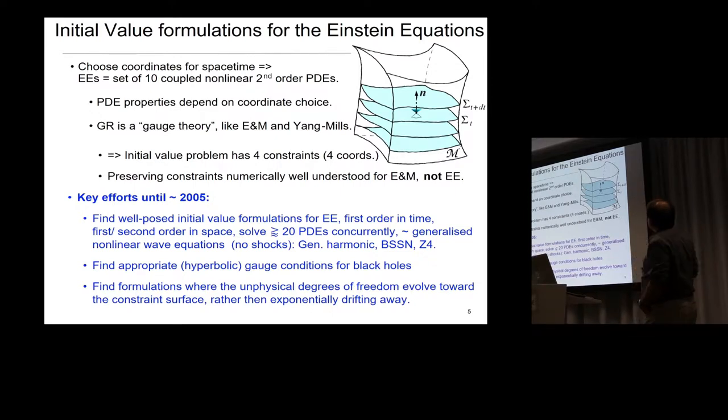A little bit about how, in principle, we solve the Einstein equations. So if you want to do this systematically, you have to provide some initial value formulation. So if this is a cartoon picture of your spacetime, four-dimensional, you have to slice, you have to use a time coordinate T. You have to slice, and each of these slices here will be three-dimensional space at different times. And then you solve your equations forward in time. So essentially, if you choose some coordinate systems for your spacetime, the Einstein equations become a set of ten coupled nonlinear second-order partial differential equations. Problem is, the properties of the PDEs depend a lot on your choice of coordinates.